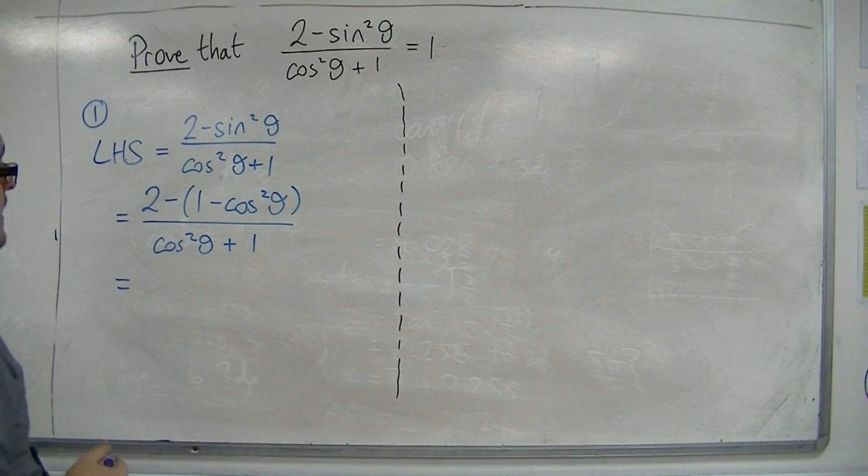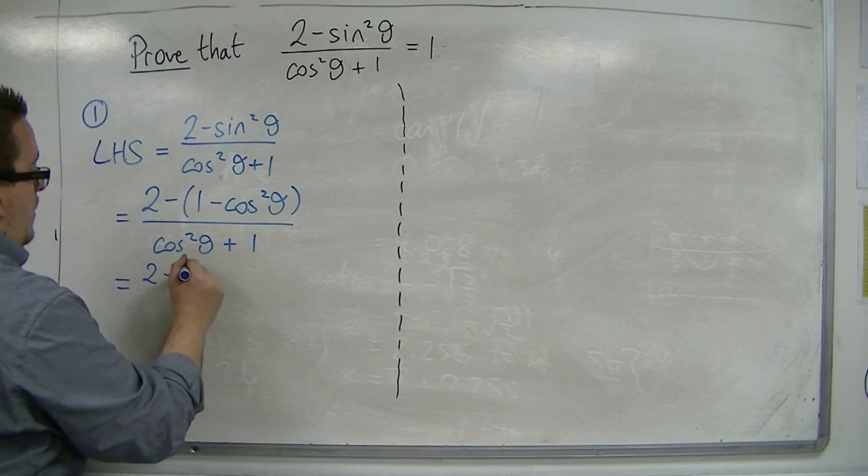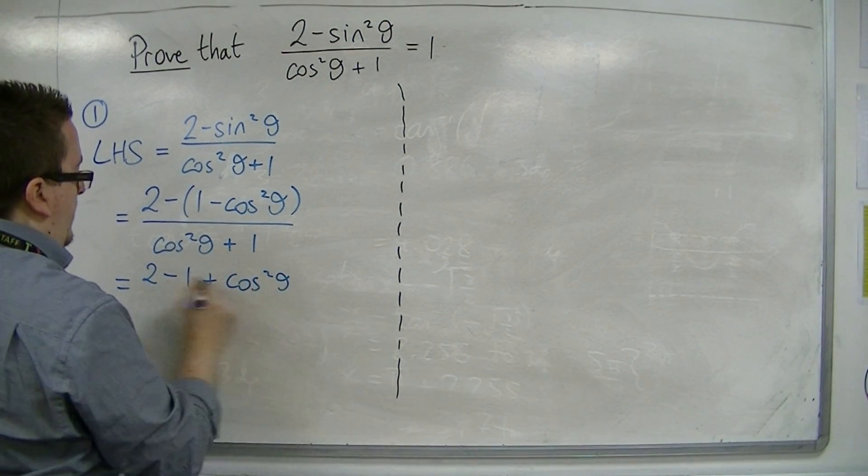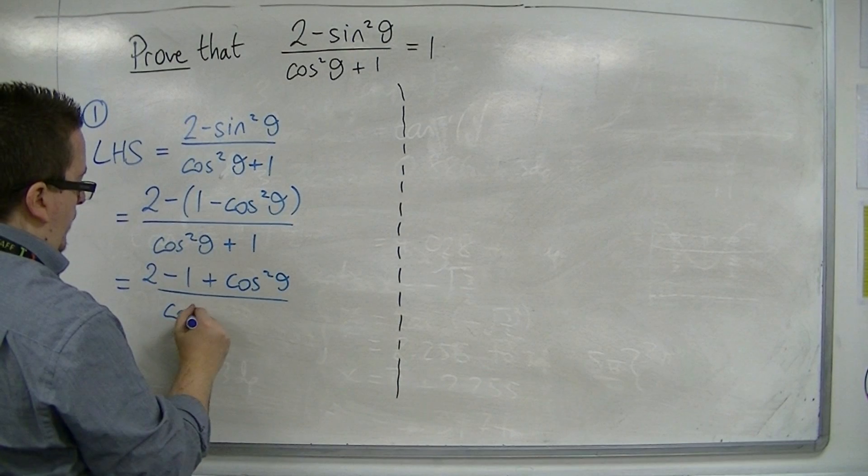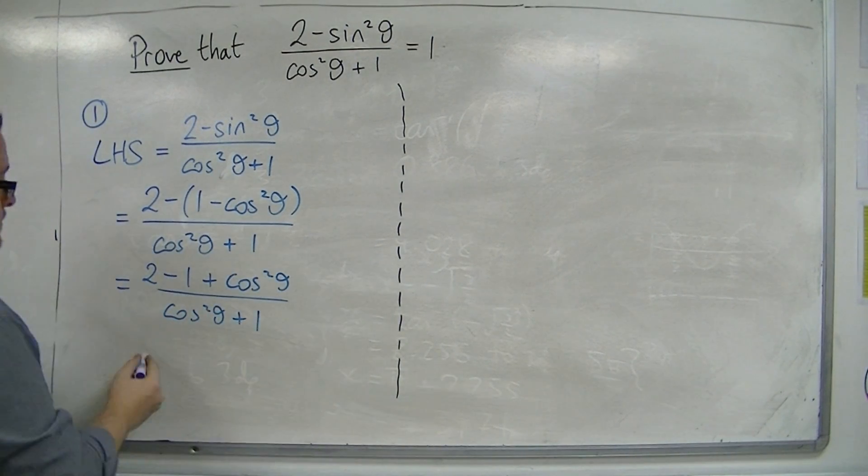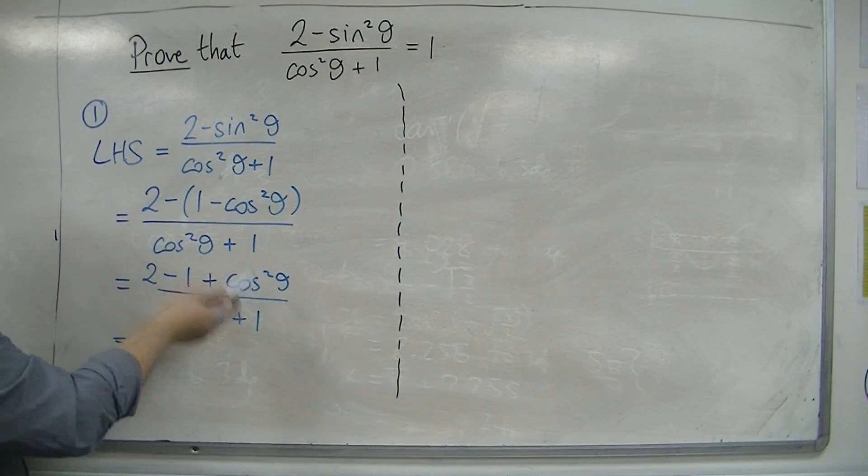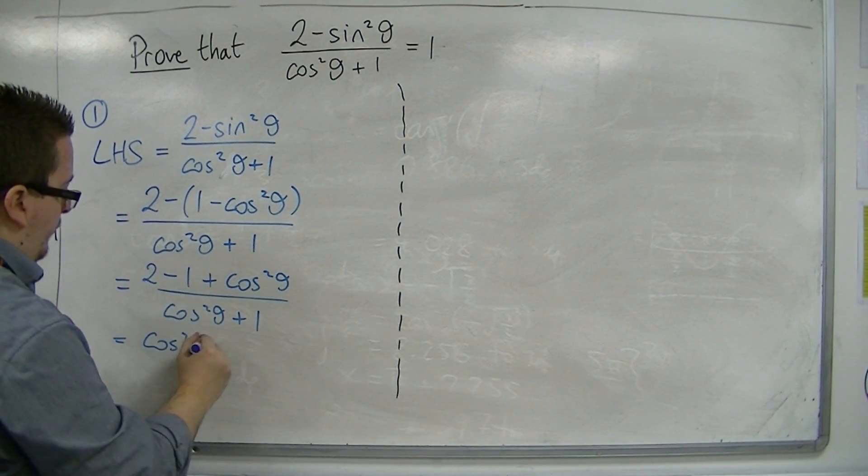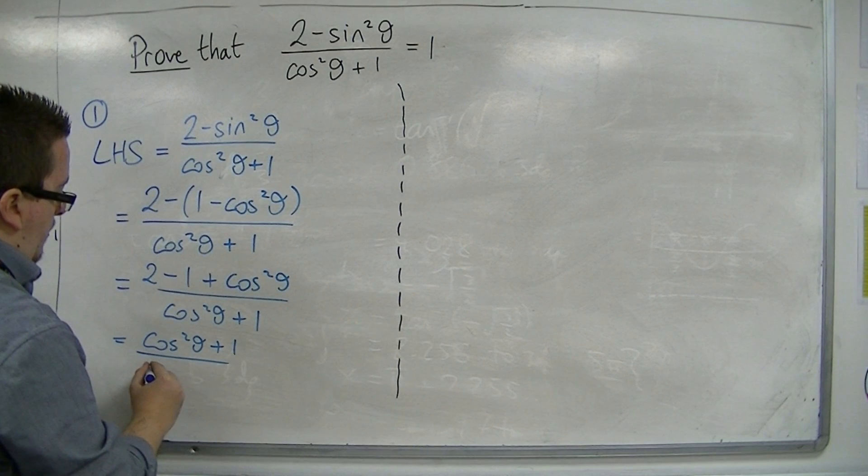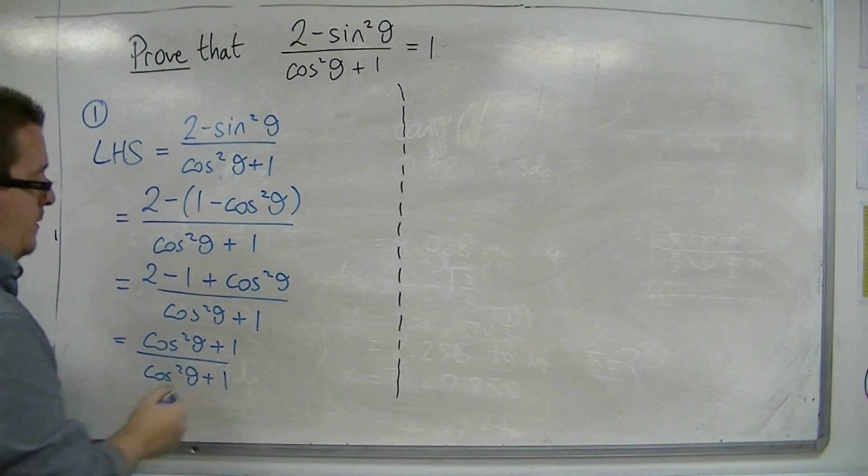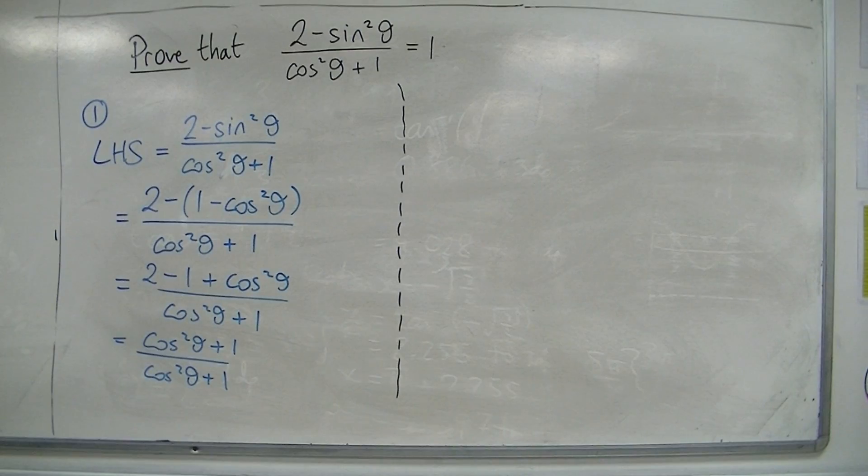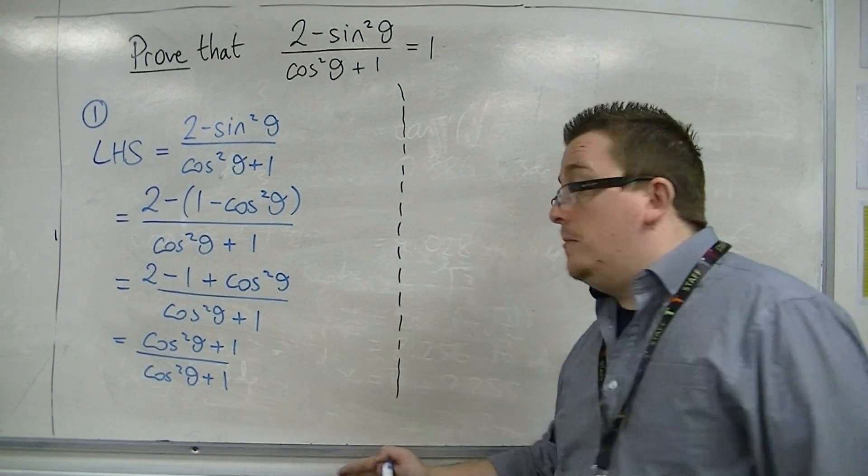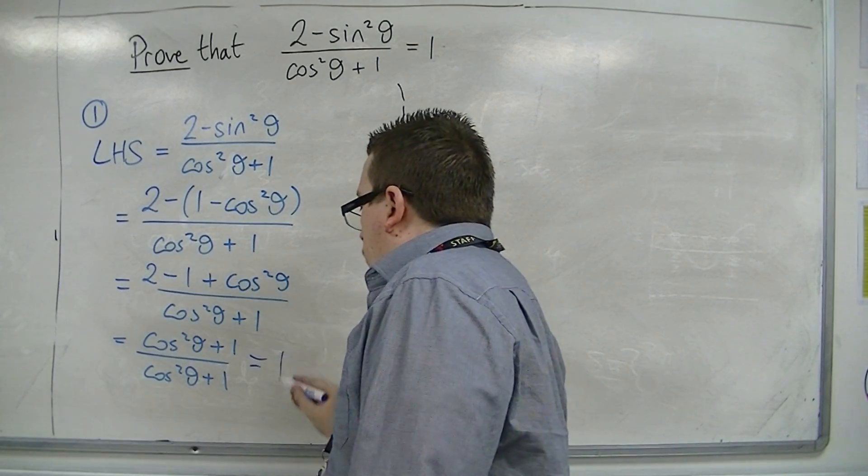Now, if I expand that top bracket, I've got 2 minus 1 plus cos squared theta over cos squared theta plus 1. The numerator of the fraction can just be written as cos squared theta plus 1, and the denominator is also cos squared plus theta plus 1. So, if the numerator and the denominator are both the same, then this is just 1.